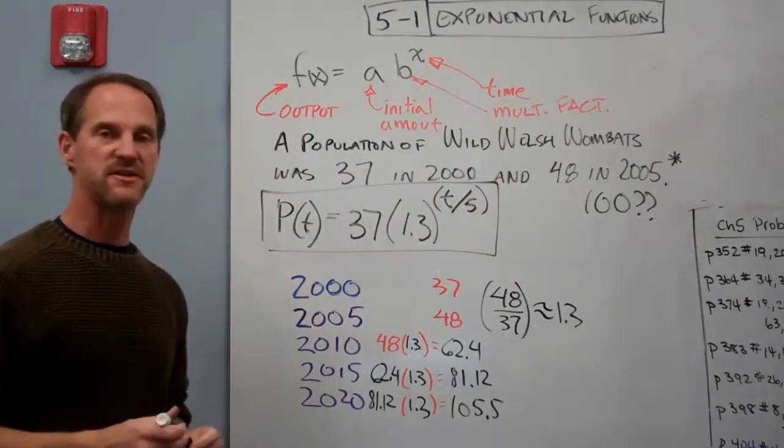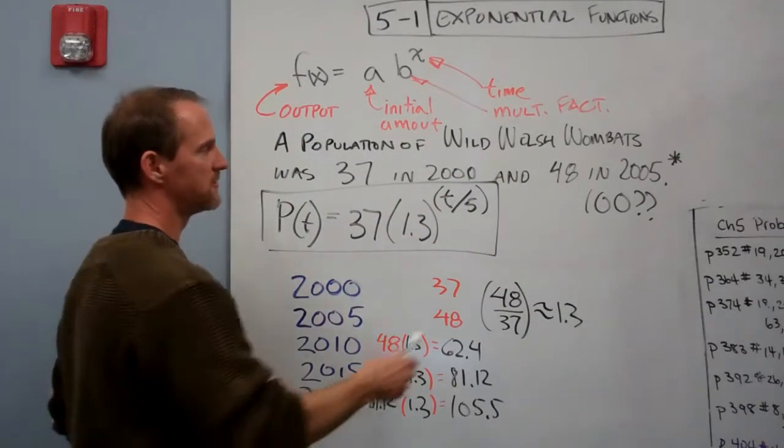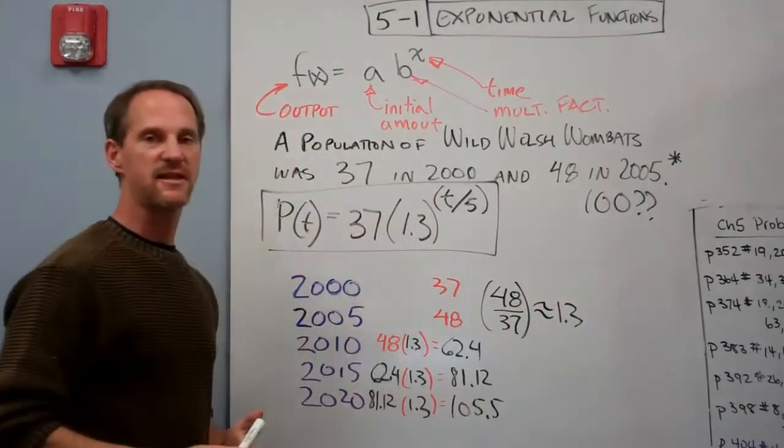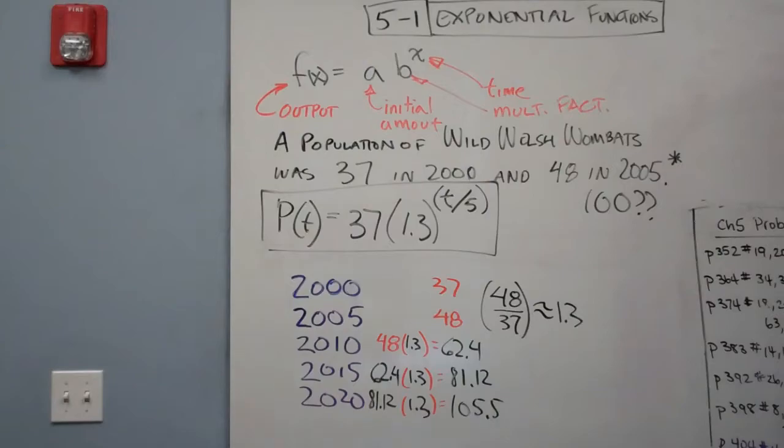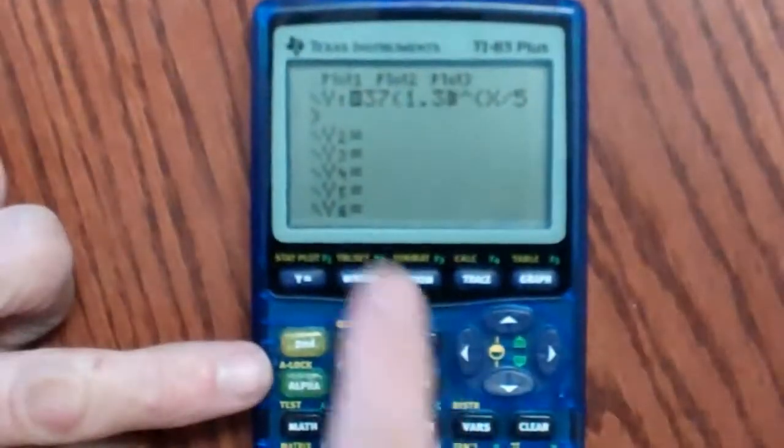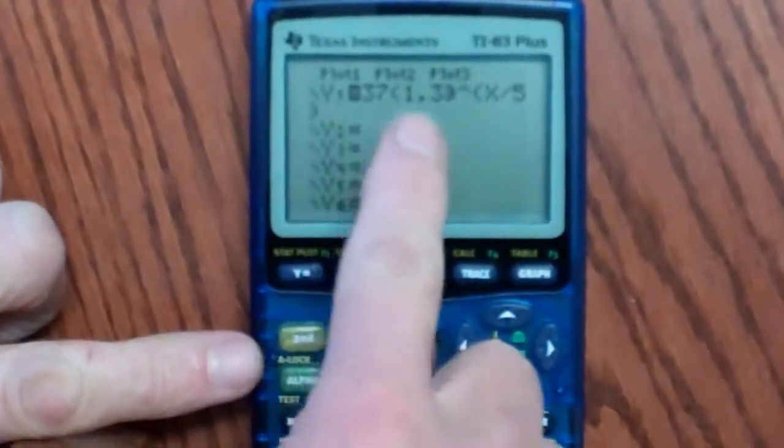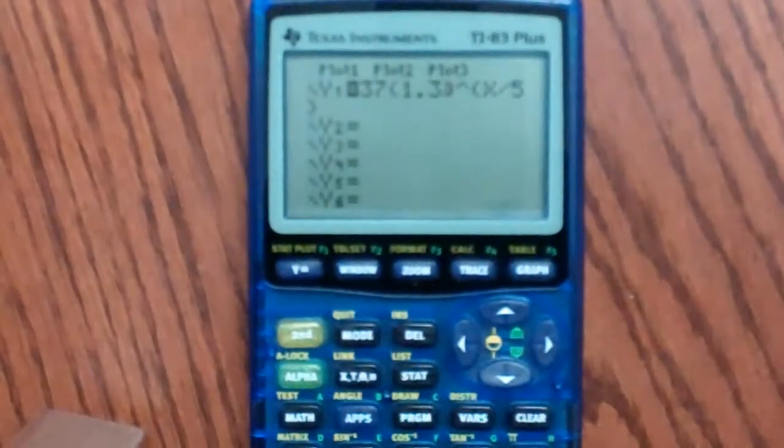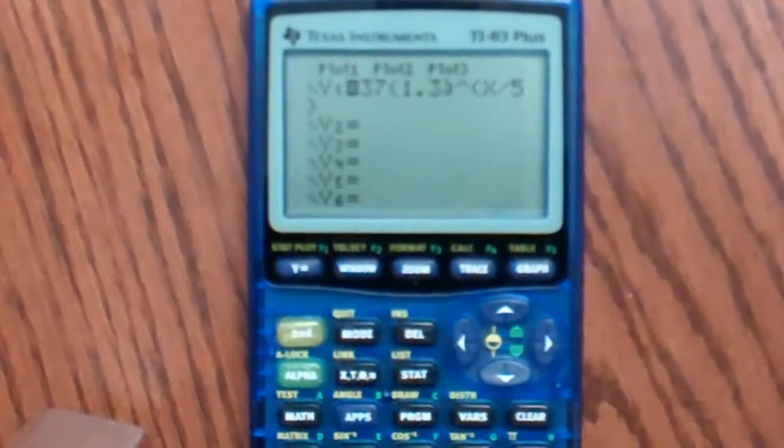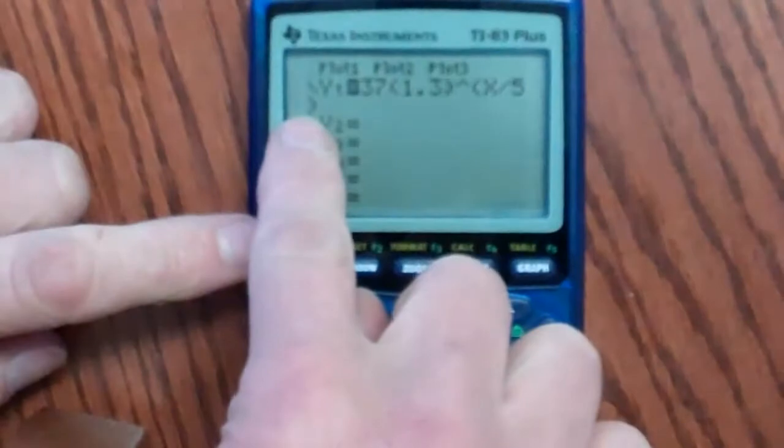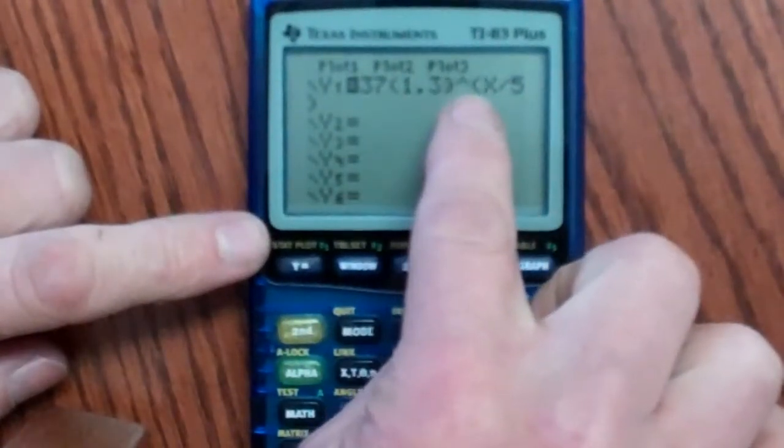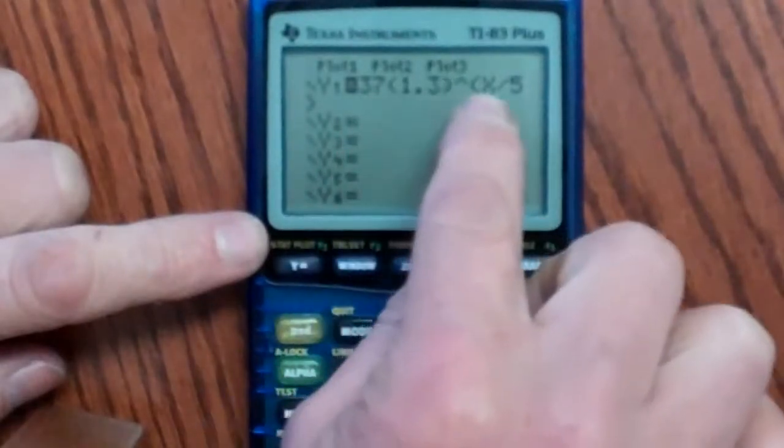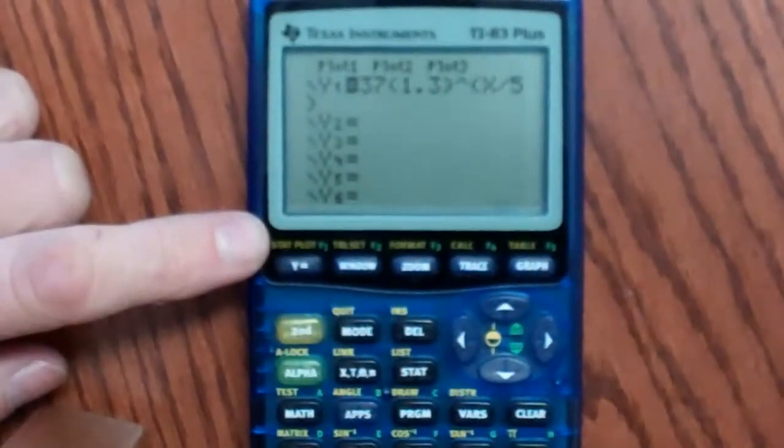And then I'm going to type it into the calculator, and I'm going to solve for when as nearly exactly as I can get to 100. I've typed this into the calculator here. It's 37 times 1.3 raised to the x over 5, with the parentheses carrying on down here. You want to be careful to include the parentheses, otherwise it'll raise it to the x and then divide the whole thing by 5, and we don't want that.